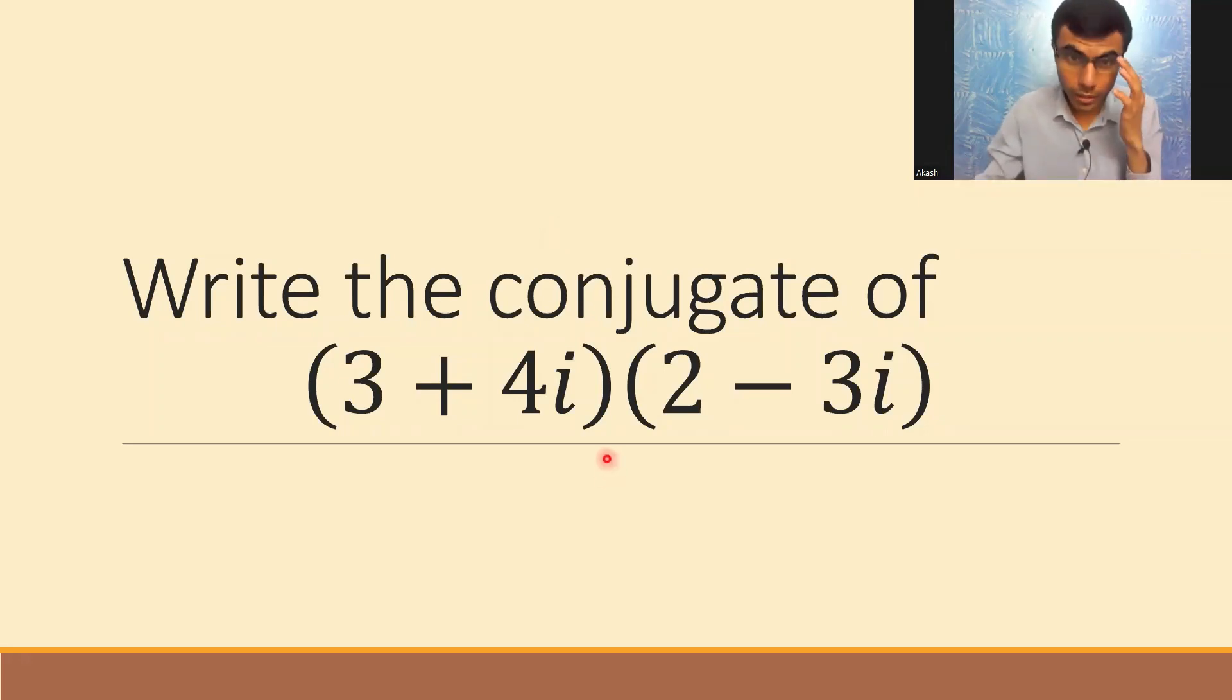Now, let's see how to find the conjugate of 3 plus 4i into 2 minus 3i. But before that, first we have to simplify this and write it into the form a plus ib and then find out its conjugate.